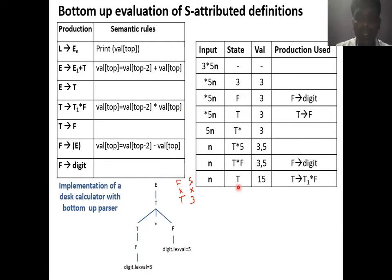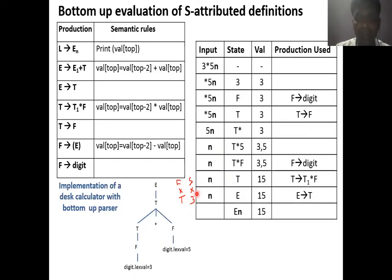Now I encounter T, and T is replaced by E. Whenever I replace T by E, the value at the top of the value stack remains 15. Then E is replaced by L. Whenever I replace E by L, I execute the print action for value[top], printing the result. This is the bottom-up evaluation used for the S attribute definition.